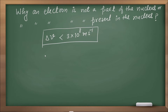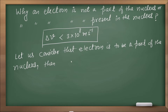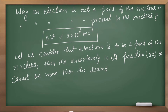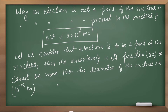Let's calculate the actual value of delta v. If the electron is to be part of the nucleus, then what is the uncertainty in its position? The uncertainty in its position cannot be more than the diameter of the nucleus. So the maximum uncertainty in position, delta x, is of the order of 10⁻¹⁵ meters, which is the diameter of the nucleus.